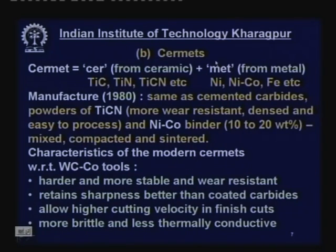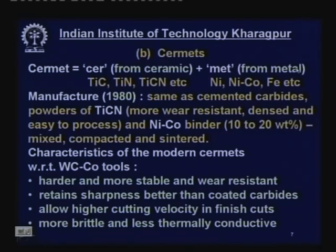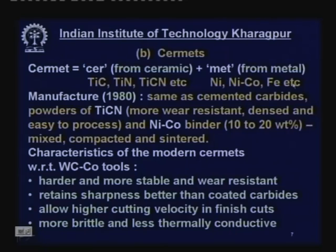Another class of advanced cutting tool is the Cermet — an improved version of ceramic. The name 'Cermet' is coined from CER (ceramic) plus MET (metal). Ceramic here refers to titanium carbide, titanium nitride, and titanium carbon nitride, which are refractory and most stable against wear and temperature. The metal component — nickel, nickel-cobalt, or iron — acts as the binder and imparts strength and toughness.